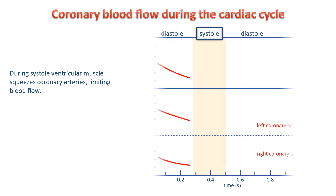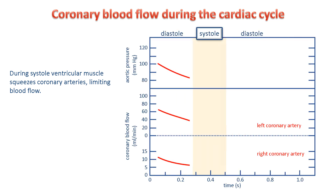This figure shows how blood flow varies during the cardiac cycle, starting in the middle of diastole when the muscle is relaxed. Blood flow in the left and right coronary arteries is plotted in the two panels at the bottom, with concurrent pressure changes in the aorta shown at the top. The most dramatic effects on the coronary circulation are seen in the left ventricle because it contains more muscle and contracts more powerfully than the right to eject blood into the systemic circulation.